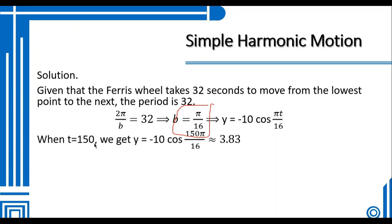When t = 150 seconds, we get y = -10 cos(150π/16) ≈ 3.83. You can verify this using your calculator. If your calculator is in degree measure, convert π to 180, so you can use -10 cos(150 × 180/16) to get this approximate value.